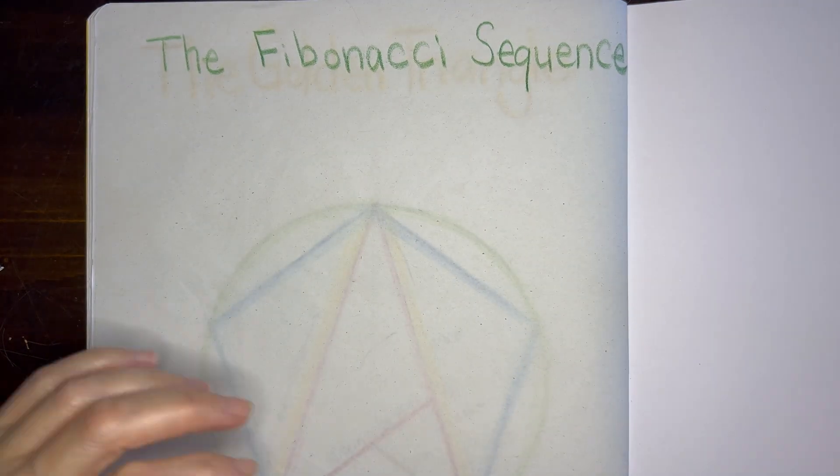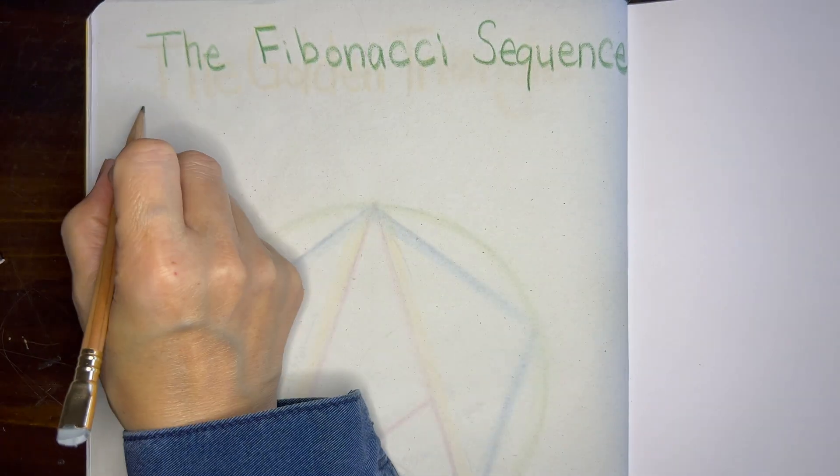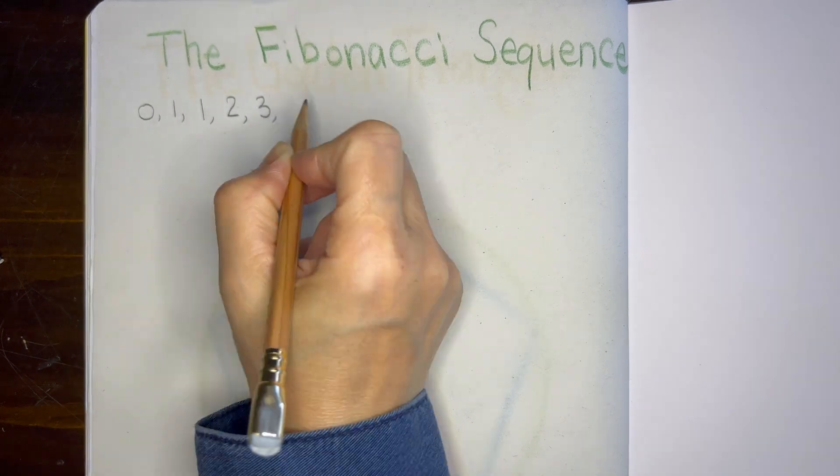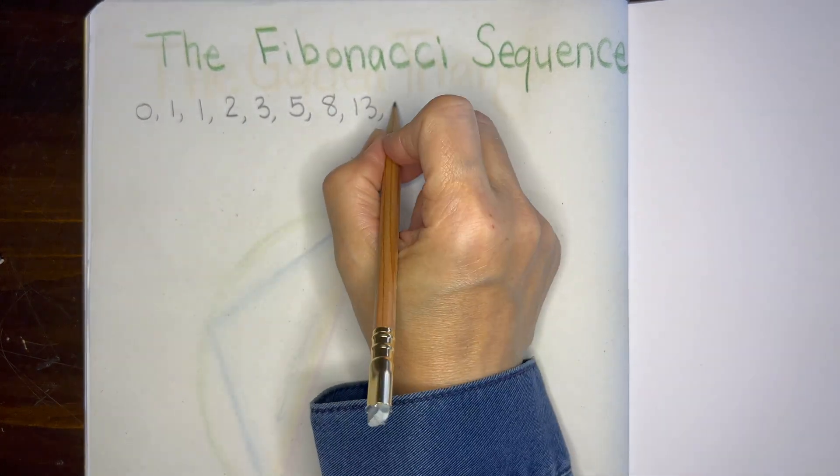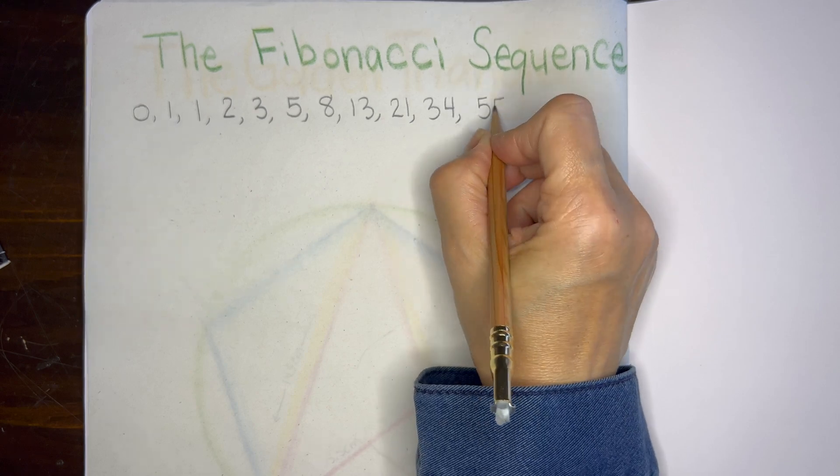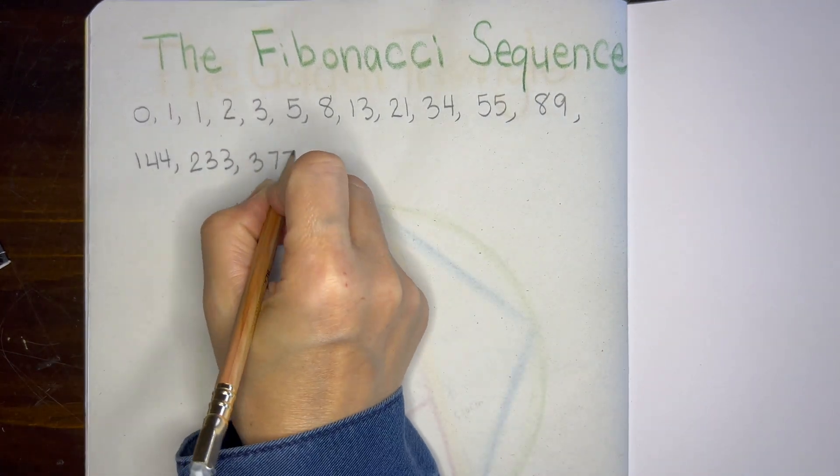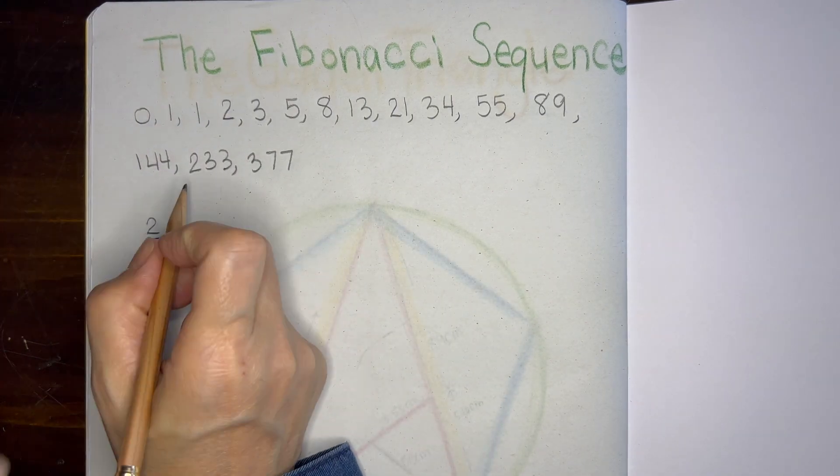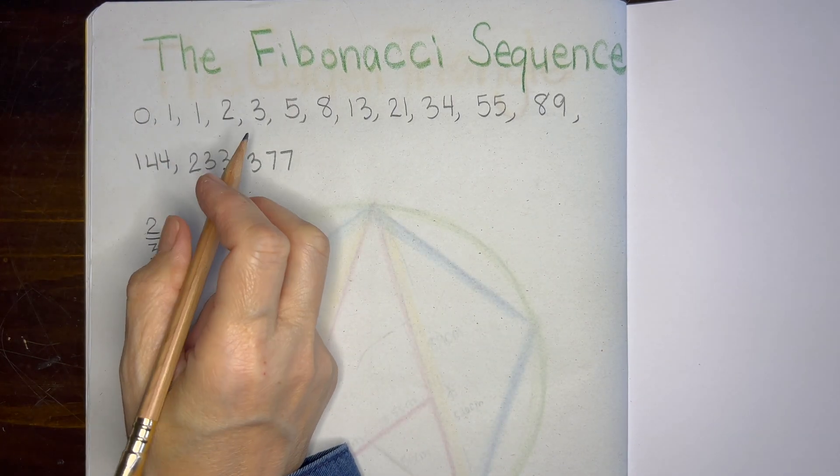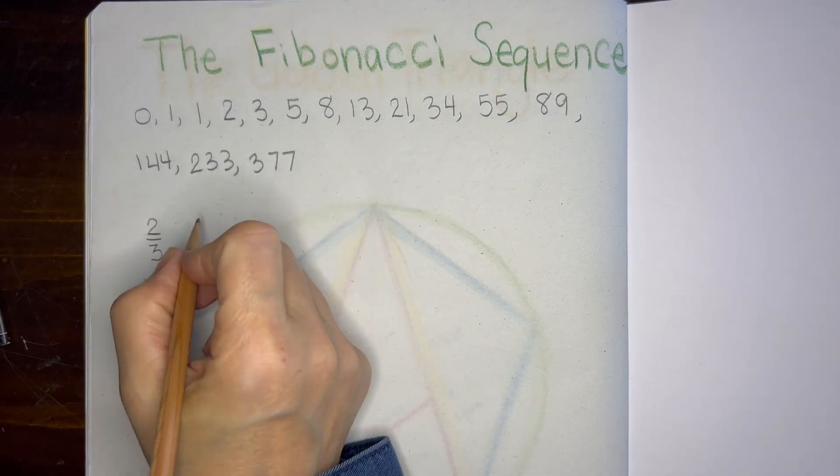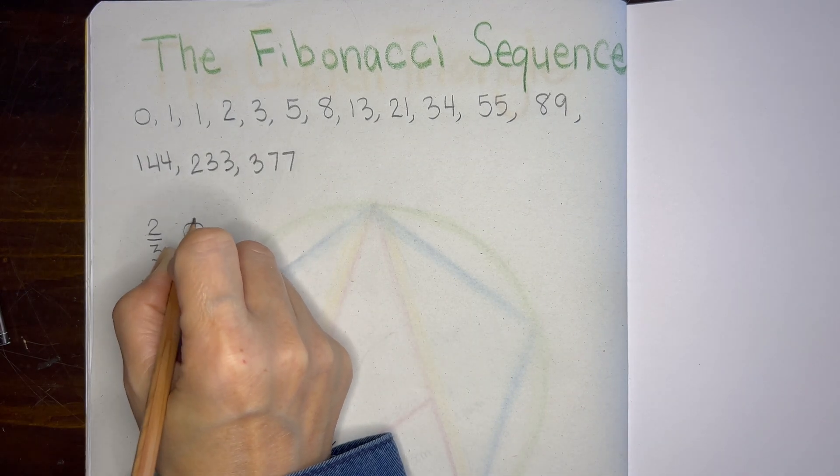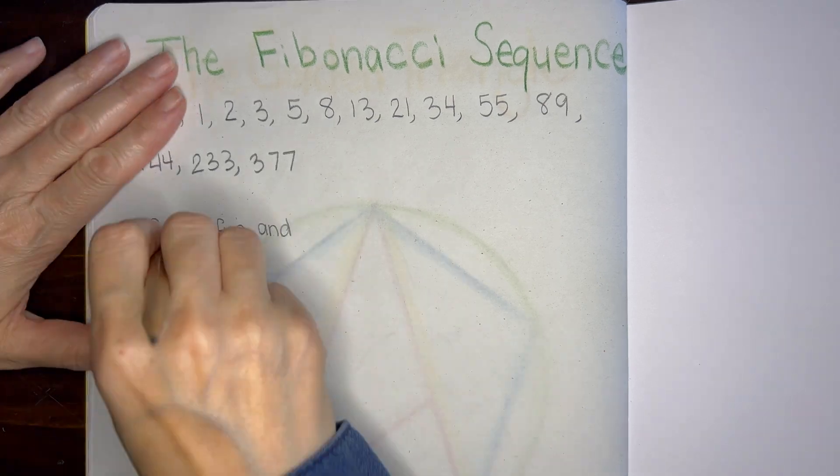So we did a lesson on the Fibonacci sequence and then we wrote down the Fibonacci sequence. We started out by copying some of the numbers that are already in the book called The Golden Section, but then we continued later on by basically adding the two previous numbers to give you the next number in the sequence.